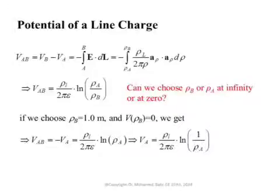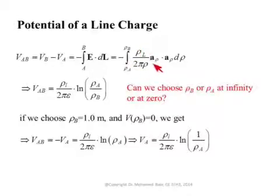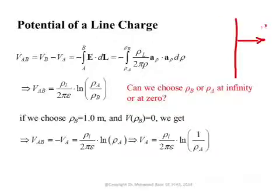In the second part of this lecture, we try to obtain the potential resulting from an infinite linear charge. We have seen before that the field resulting from an infinite linear charge along the z-axis is given by Rho_L over 2π Rho in the Rho direction. If you draw your infinite charge, the field is always pointing in the Rho direction and is decaying as 1 over Rho.